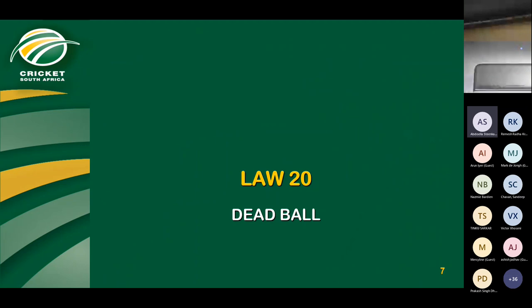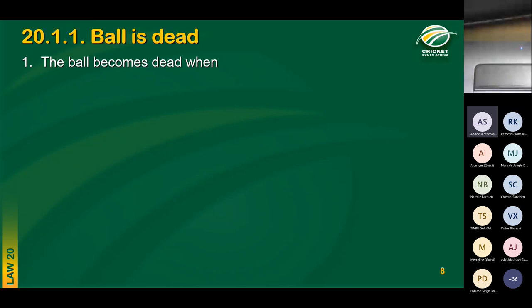The first law I'll cover this evening is the dead ball law. There are two ways the ball becomes dead: it either becomes automatically dead, or the umpire needs to call and signal dead ball. We'll first cover when the ball automatically becomes dead — there's an incident that takes place that causes the ball to become dead. The second that the ball becomes dead, anything that happens afterwards is irrelevant.